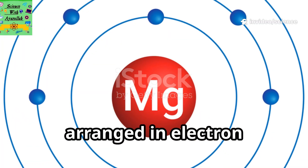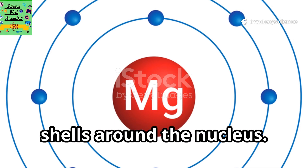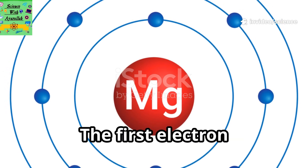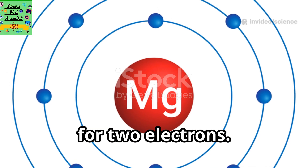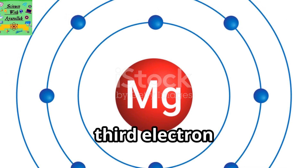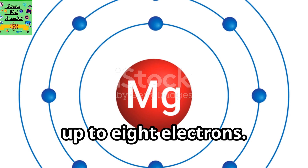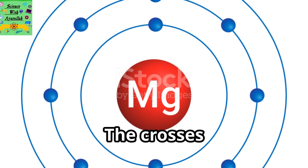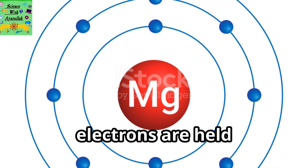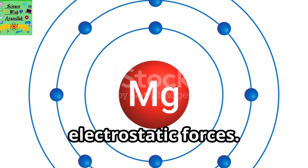The electrons are arranged in electron shells around the nucleus — this is the electronic structure. The first electron shell only has room for two electrons. The second and third electron shells have room for up to eight electrons. The crosses in diagrams represent the electrons. Remember that the electrons are held in place by electrostatic forces.